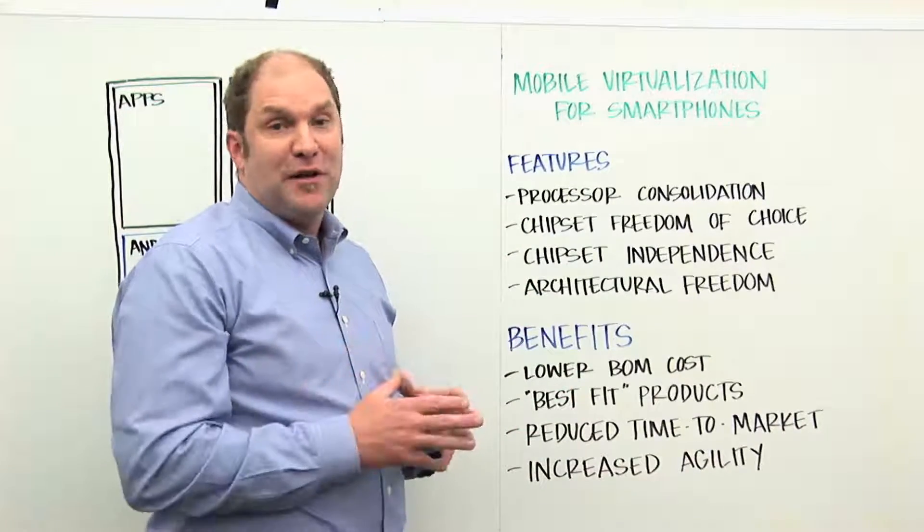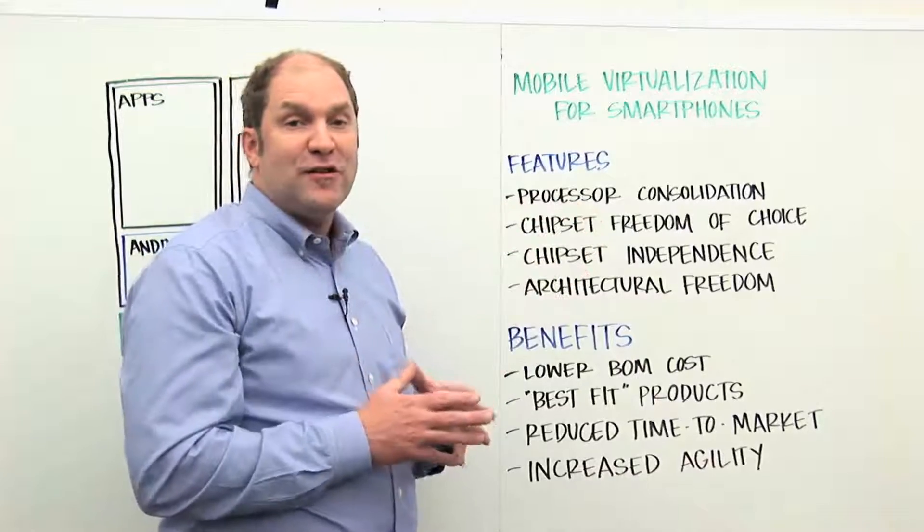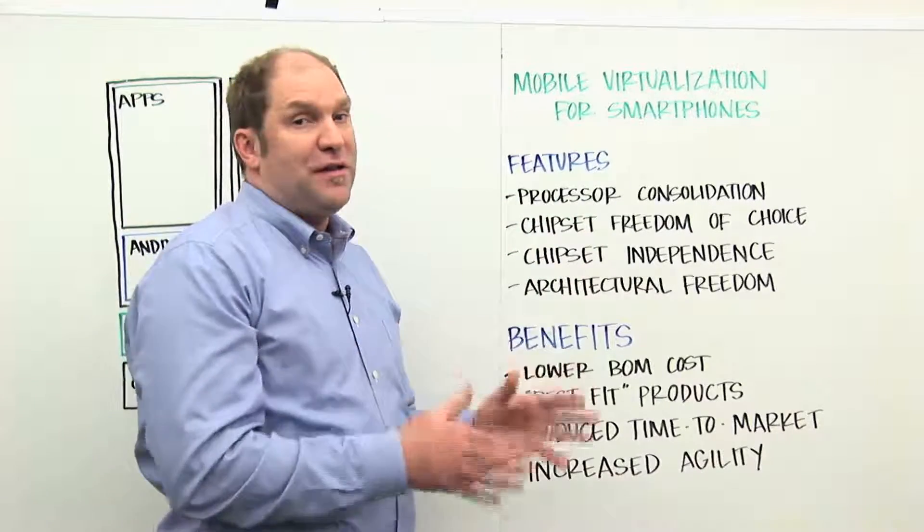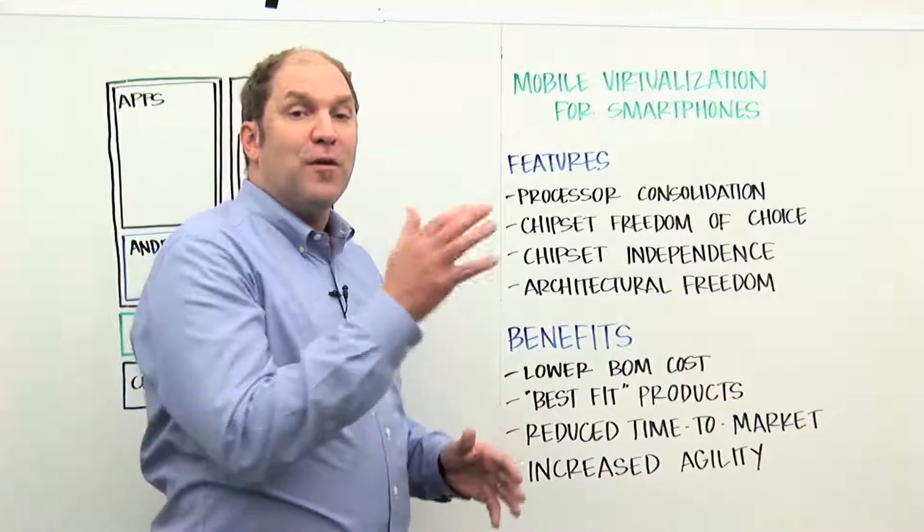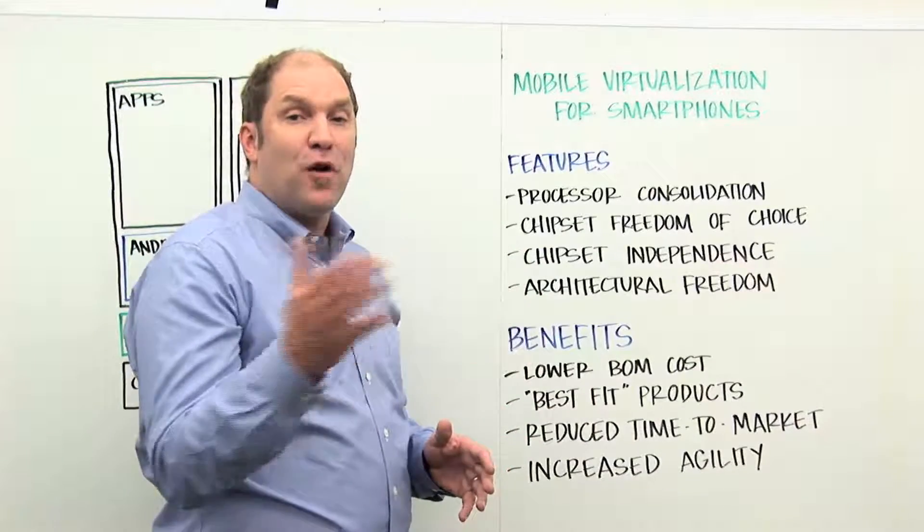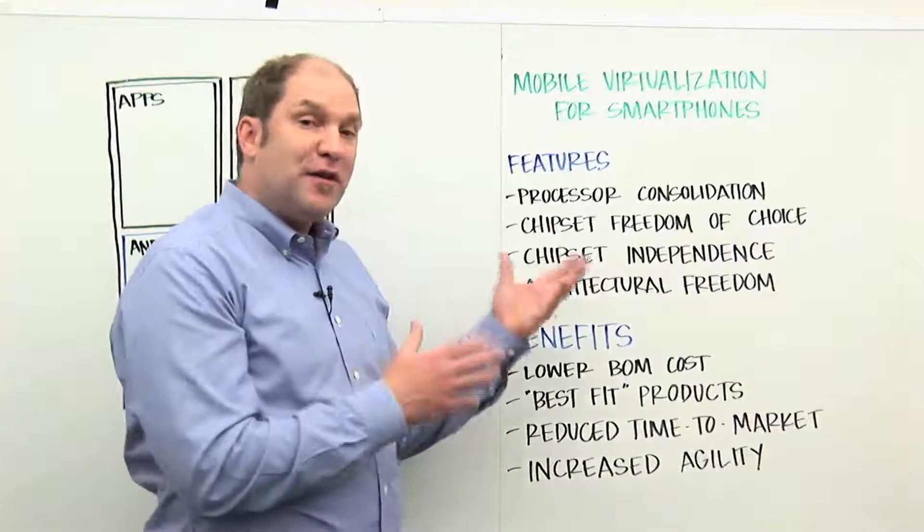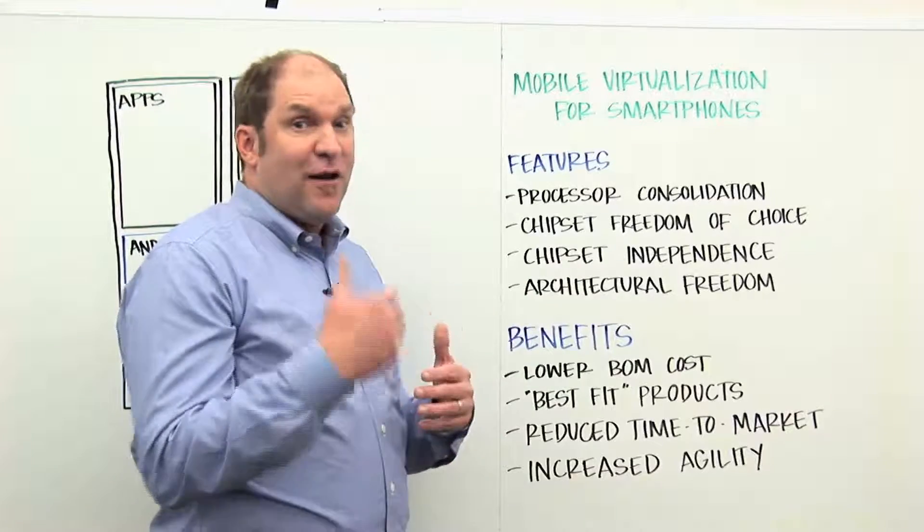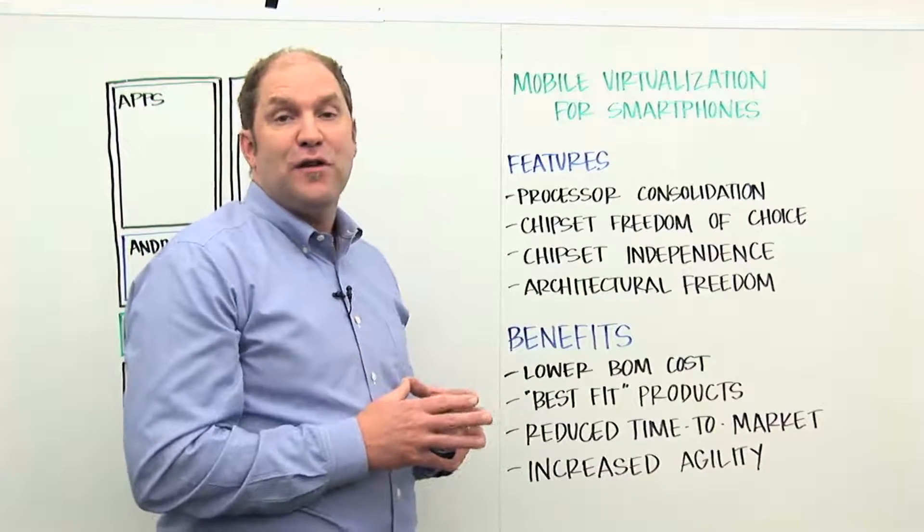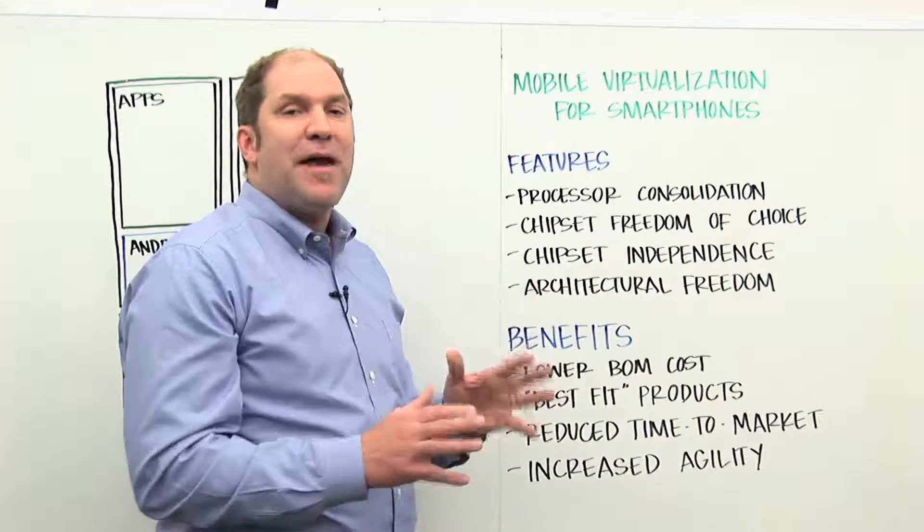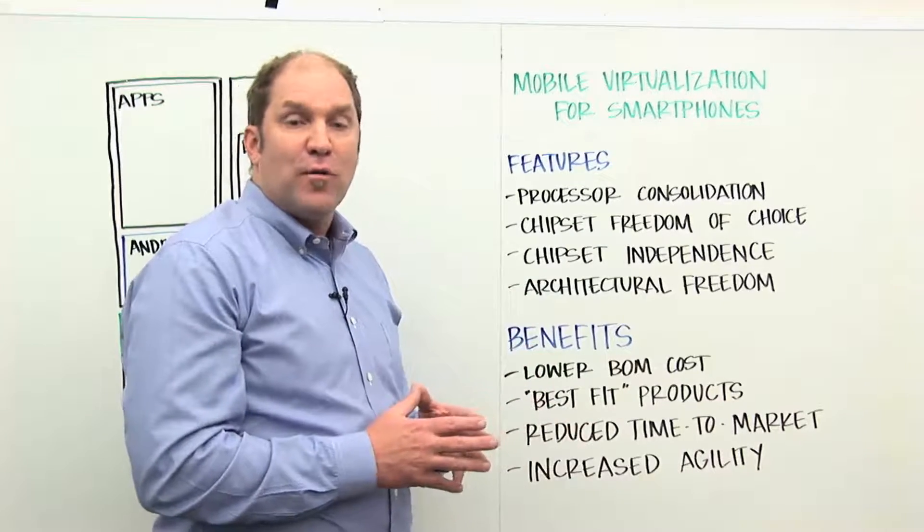By allowing you to decouple the software architecture in terms of the number of subsystems that you compose your software from from the number of physical processors underneath, you gain the flexibility to run the same software architecture on multiple different chipsets with different number of cores to offer multiple products at different price performance points. You gain the flexibility from the software point of view to add a third or fourth software subsystem without any impact on the underlying hardware requirements.